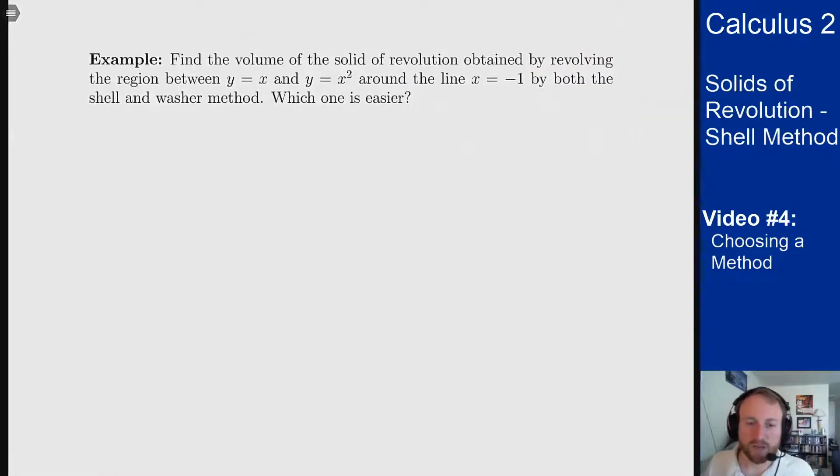As an example we're going to do this problem two different ways. We want the region between y equals x and y equals x squared around the line x equals minus one by both shells and washers. We'll get the same answer both times and then we'll see which one looks easier at the outset and then you can also pick which one you think is easier for solving these problems in the future.